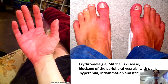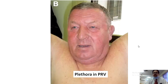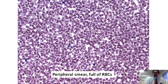Erythromelalgia of the hands and feet, known as Mitchell's disease, is caused by blockage of peripheral vessels and presents with pain, hyperemia, inflammation, and itching. Plethora arises from the same mechanism. On peripheral smear, the slide is flooded with RBCs, with only rare platelets visible, confirming the diagnosis of polycythemia vera.